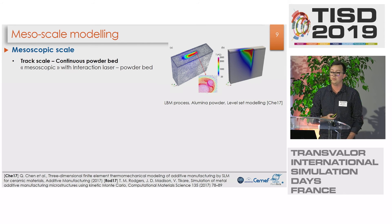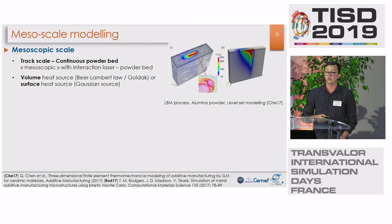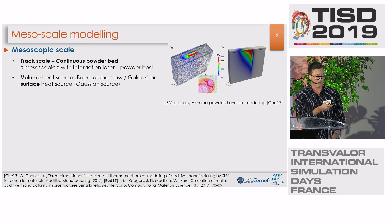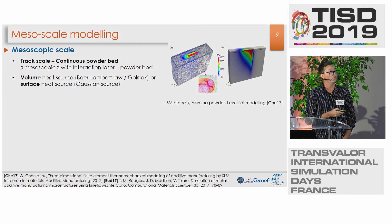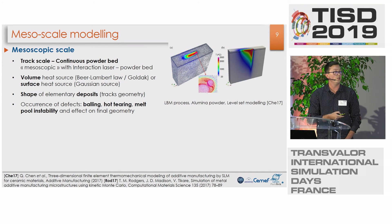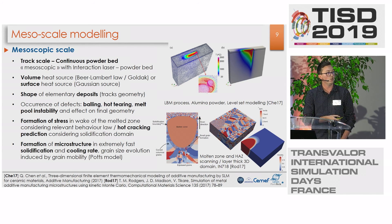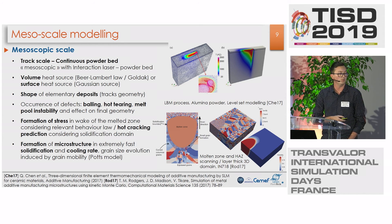Now I will talk about the mesoscopic modeling, which is a large part of my PhD. Contrary to the modeling at the macro scale, we take into account the melt pool behavior and we want to get a better understanding of the laser-matter interaction. We use different heat sources to introduce the laser energy. Because we are taking into account the melt pool flow, we are able to predict, for example, track geometry, or phenomena such as balling, shearing, or melt pool instabilities. We are also able to take into account cracking, and we can combine this with developments in CMF to get the microstructure under extremely fast solidification and cooling rates.